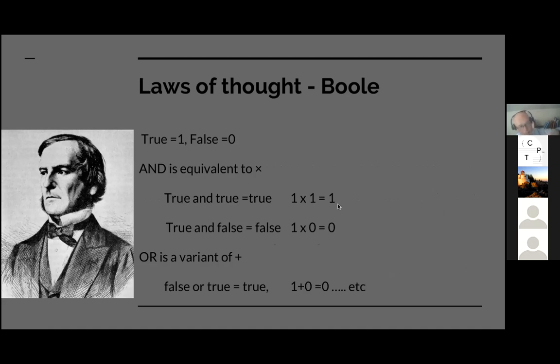There's a mistake in this. Basically, he's saying true is one, false is zero, and is equivalent to a multiplication, and or is a variant of plus. My mistake is saying one plus zero is zero. It should be one plus zero is one, obviously. It's modular arithmetic because he says that one plus one is one, so it's arithmetic of a bounded or what we now call saturating arithmetic, that it can't go above a certain value.